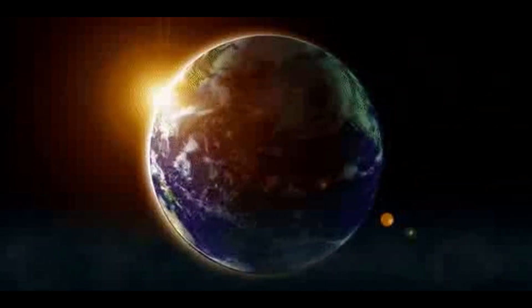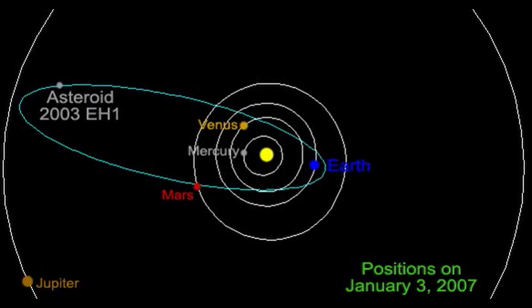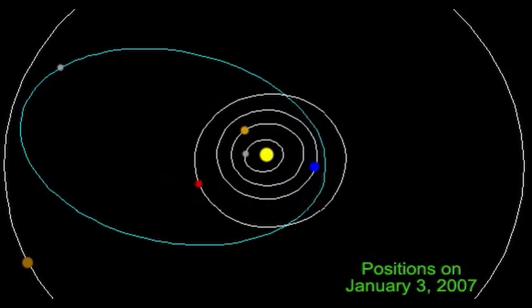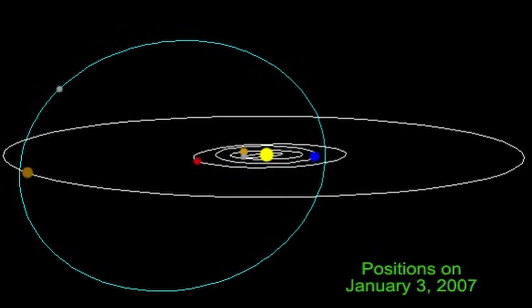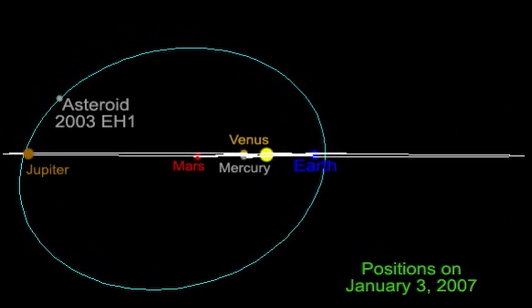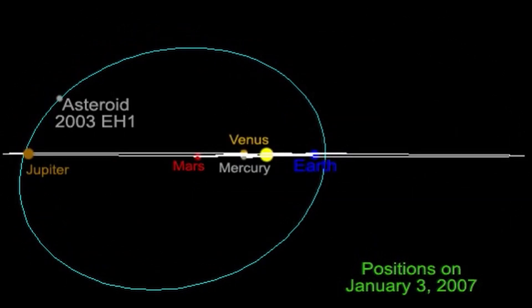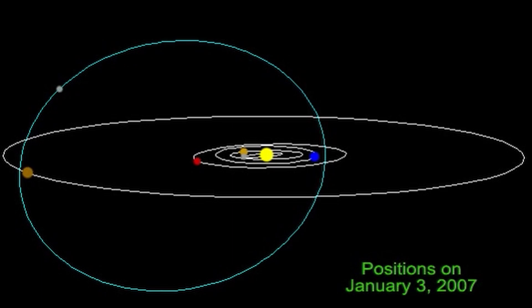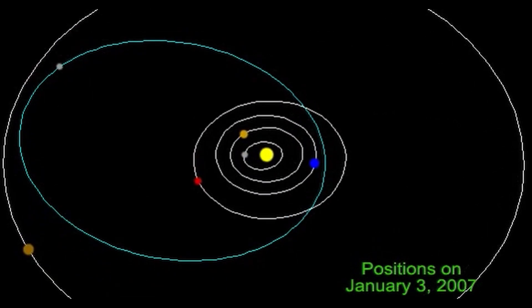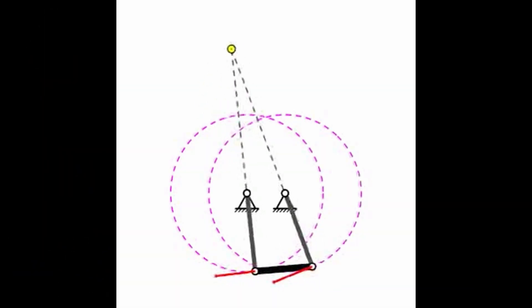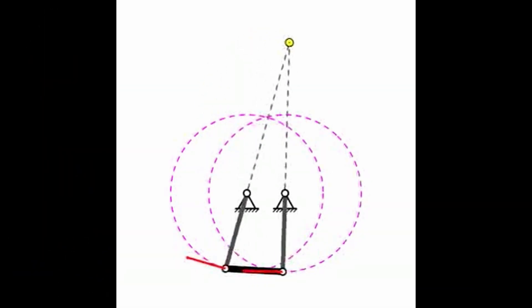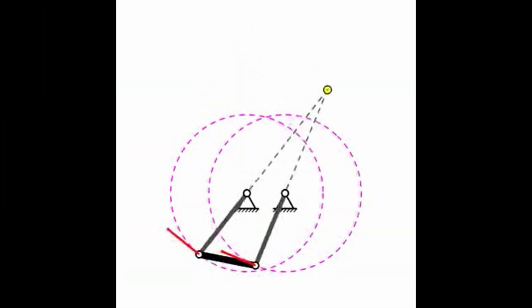To delve into the mathematics of angular momentum, we must first understand the foundational concepts of rotational motion and how they relate to linear momentum. Angular momentum is a vector quantity that characterizes an object's rotation around an axis. To make sense of this concept, we'll start by introducing the key components involved in its mathematical formulation.